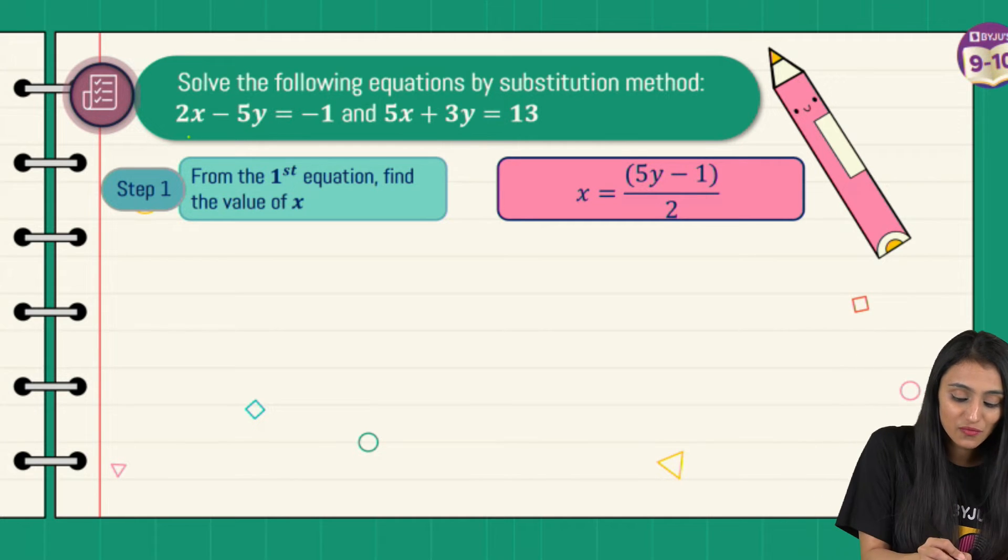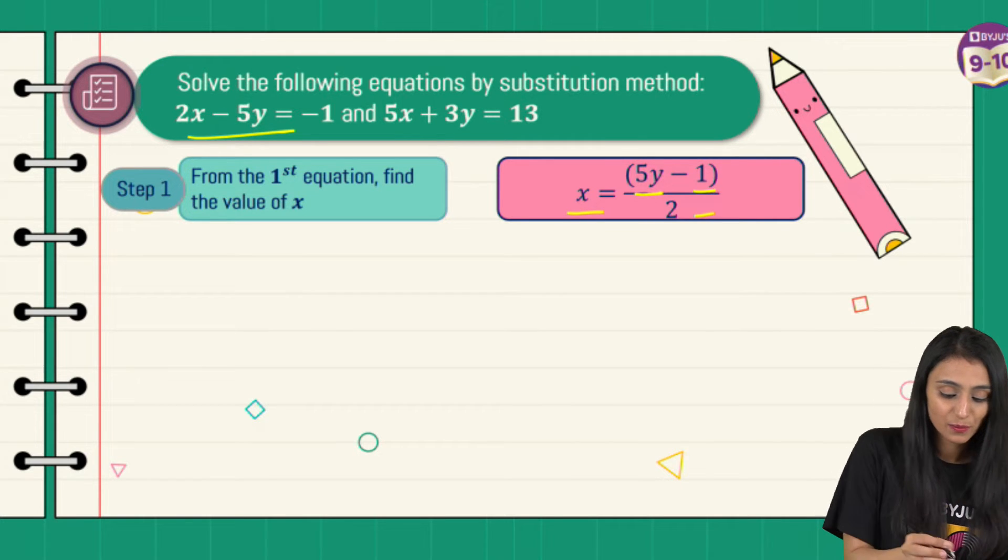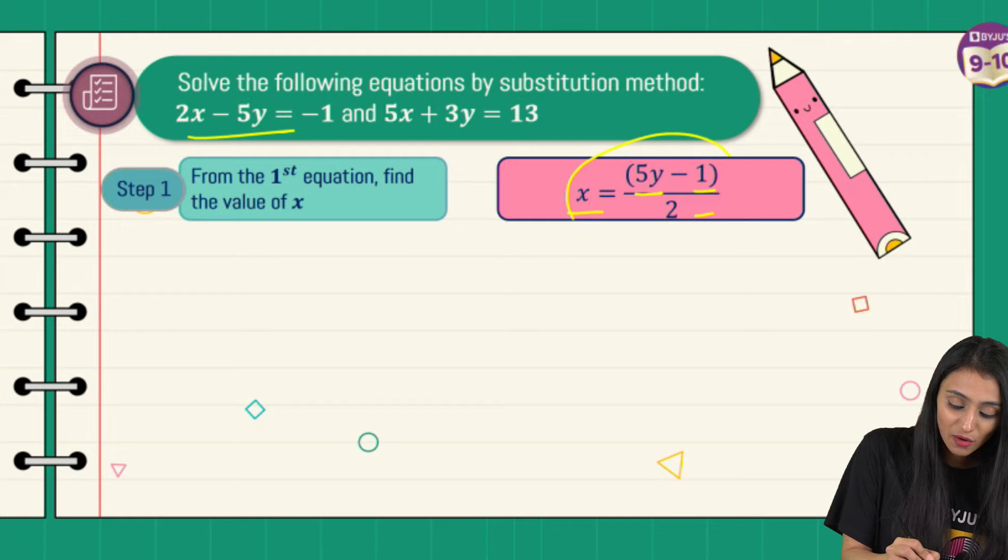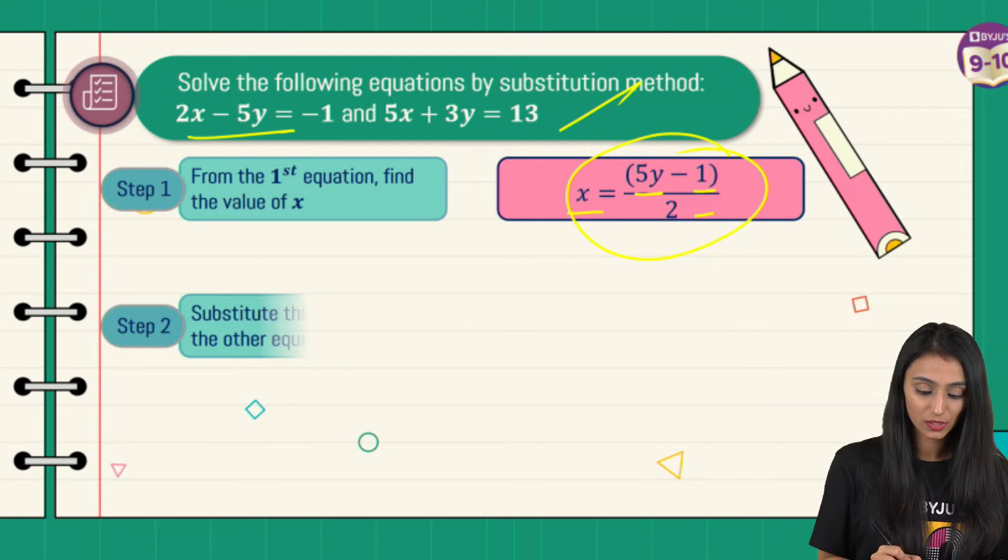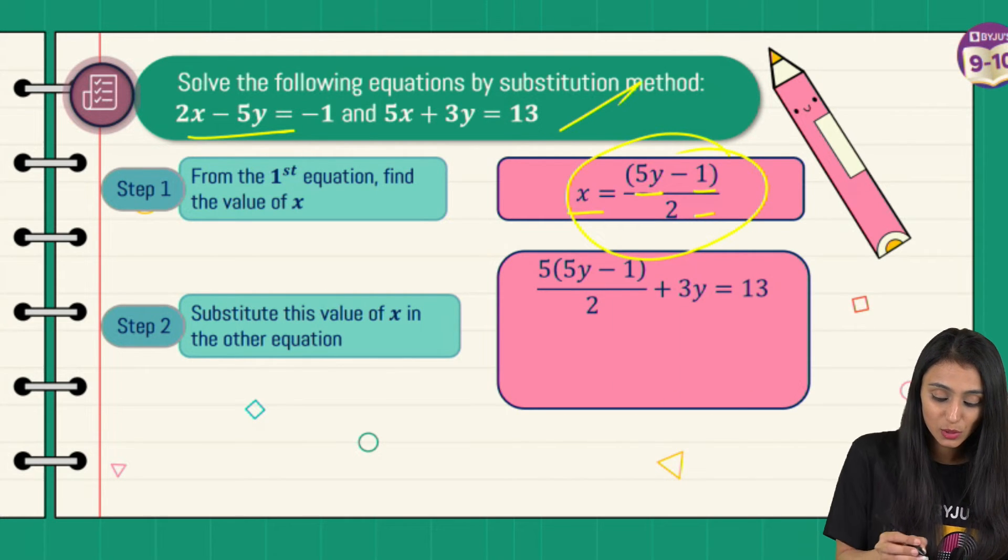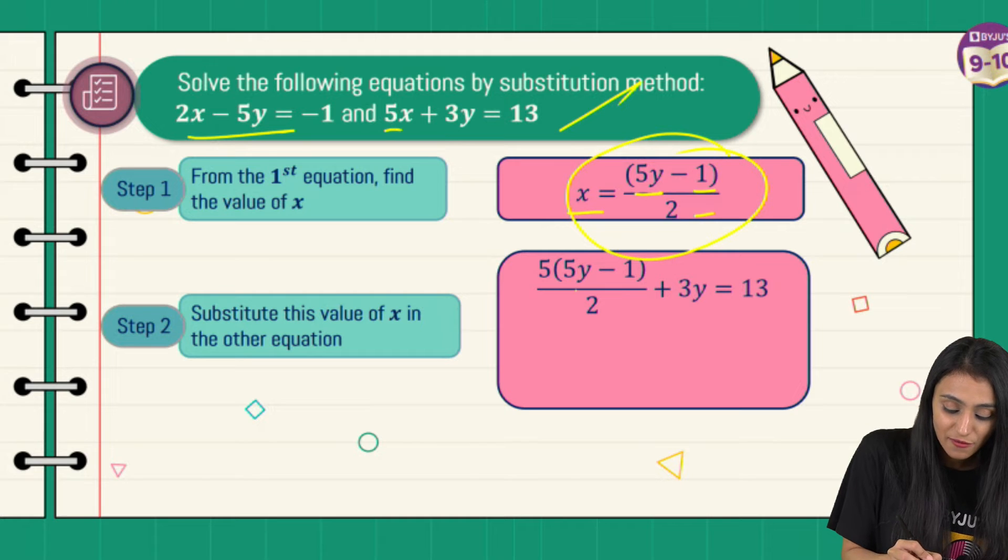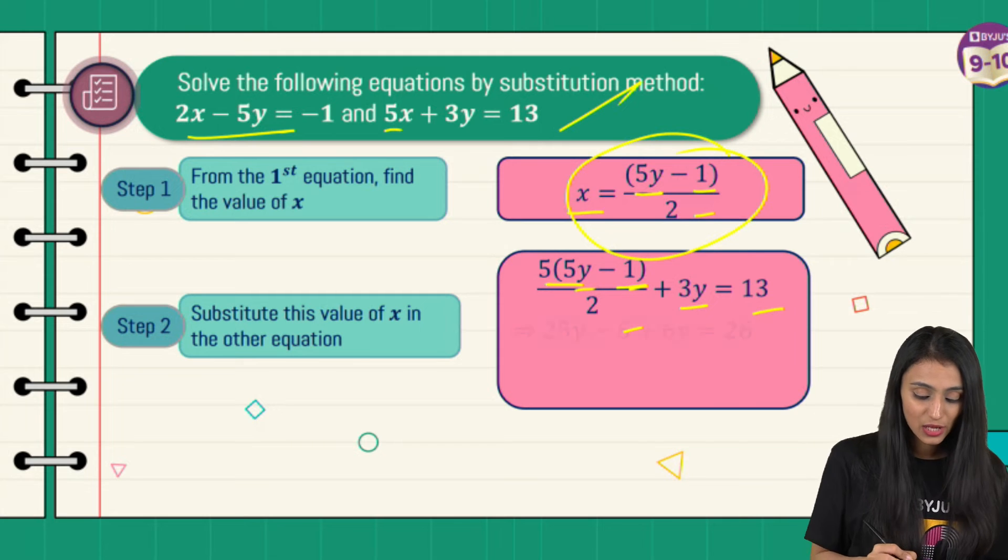Let's suppose I'm using the first equation. It's not a hard and fast rule that you always have to use the first equation - you can use the second one as well. From the first one, I'm finding the value of x. So that's going to be x equals 5y minus 1 upon 2. Then I'll substitute this value of x in the second equation. So what will this become? It's going to be 5 times (5y minus 1 upon 2) plus 3y equals 13.